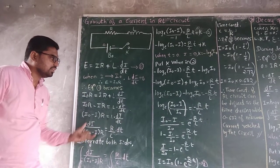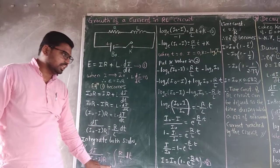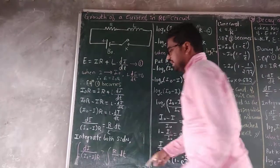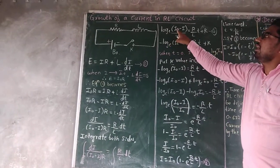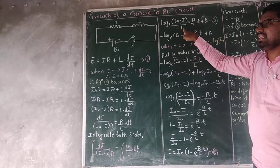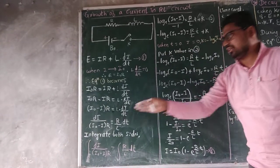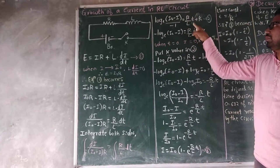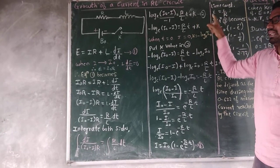Rearranging: dI / (I₀ - I) = (R/L)dt. Now integrating both sides, the left side is in the form 1/x giving log(I₀ - I) divided by -1 (due to the negative sign). The right side gives (R/L)T + K, where K is the constant of integration. This is equation number 2.